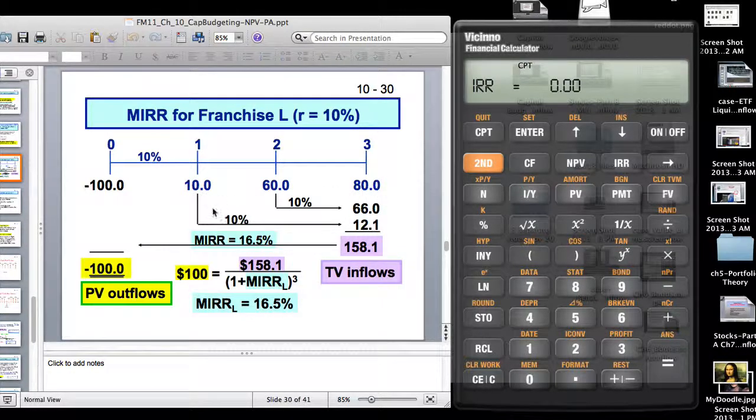Minus 100, that's the initial investment. Ten percent is your market discount rate. That's your K. Ten, sixty and eighty are your cash flows from your project. Notice what I'm doing here is this ten dollars is getting reinvested at ten percent. You don't need the calculator. It's going to get compounded two periods.